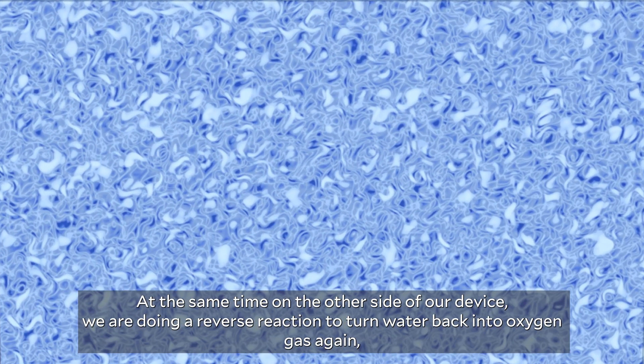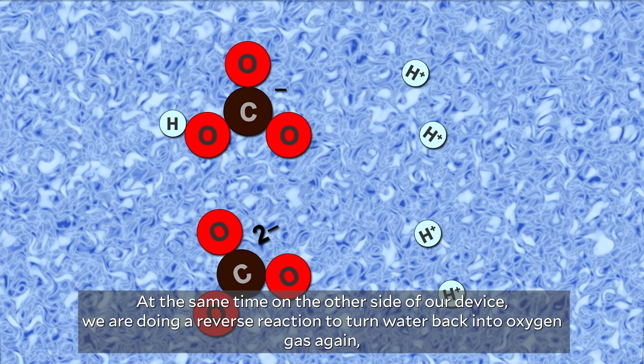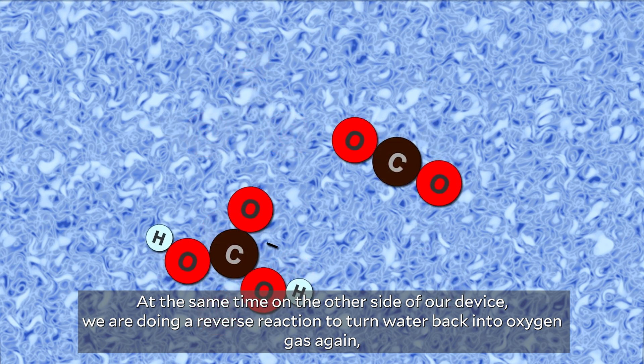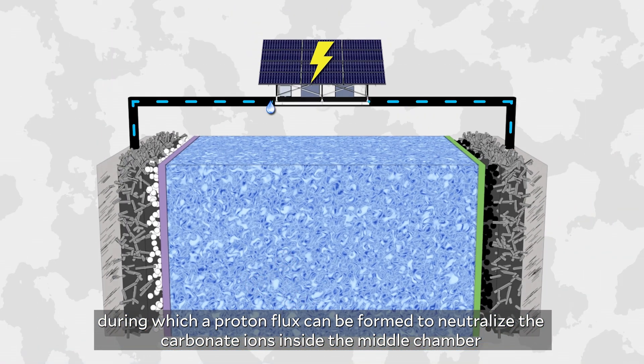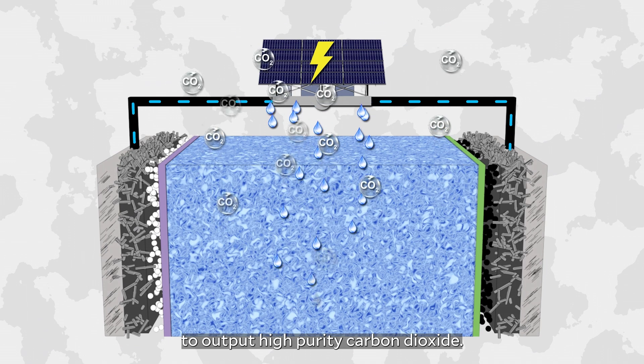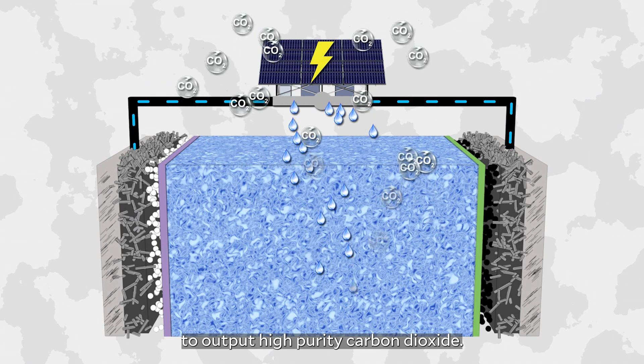At the same time, on the other side of our device, we're doing a reverse reaction to turn water back into oxygen gas again, during which a proton flux can be formed to neutralize carbonate ions inside the middle chamber to output very high purity of carbon dioxide gas.